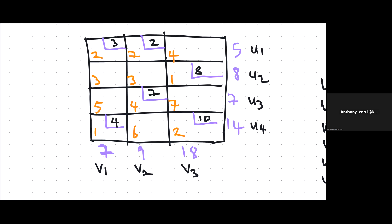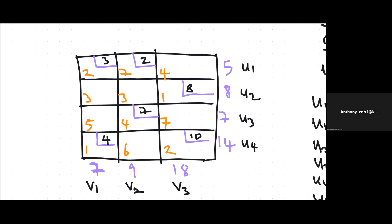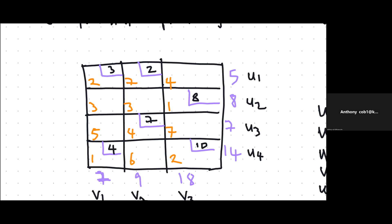Then you do two things. In the cost matrix, there are two types of cells. We have occupied or allocated cells — there are six allocated cells — and then we have unallocated cells, where we are transporting zero units.